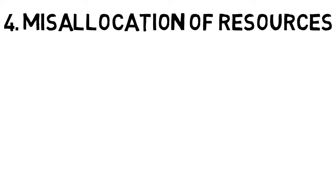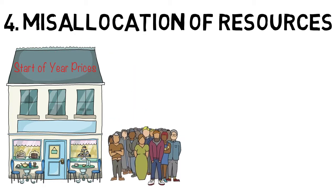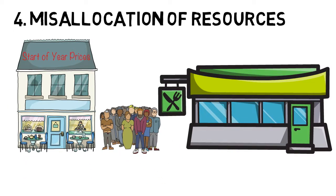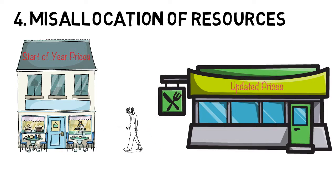Number four, inflation can cause relative price variability and a misallocation of resources. If we base our allocation of resources on the pricing system in free markets, any changes in prices will affect resource allocation. For example, a restaurant that sets its prices at the start of the year may find its product becomes either overpriced or underpriced as inflation changes, and therefore the pricing system is not working correctly for that restaurant.